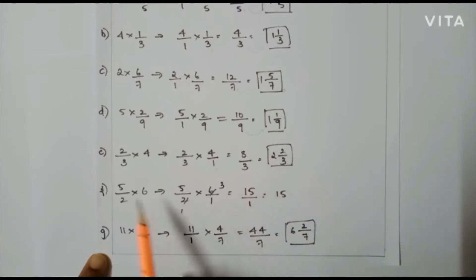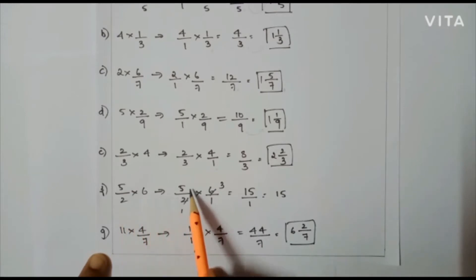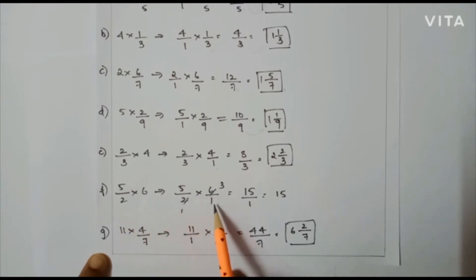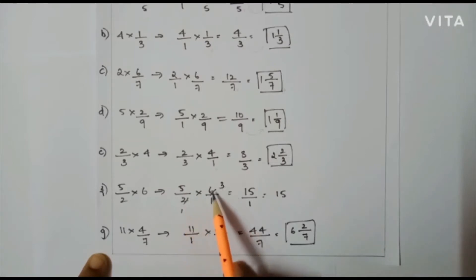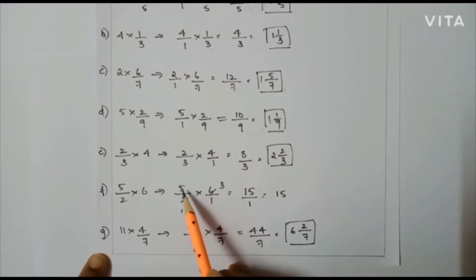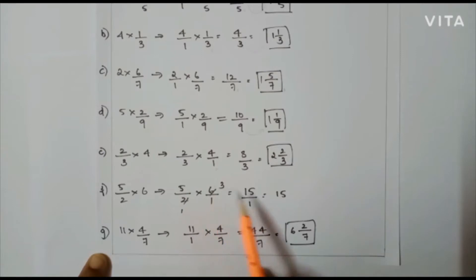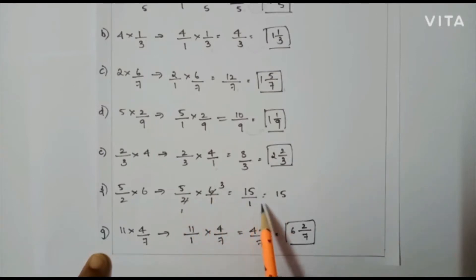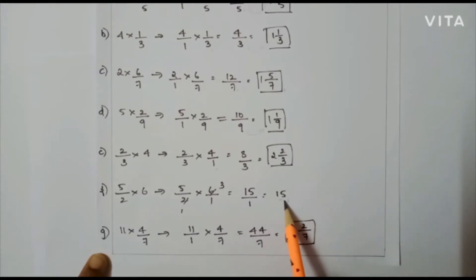The next problem: 5/2 × 6, that is 5/2 × 6/1. Here I can cancel: 2 and 6 give 1 and 3. So what is left: 5 × 3 = 15, and 1 × 1 = 1. So 15 is the answer.